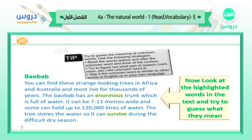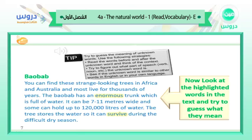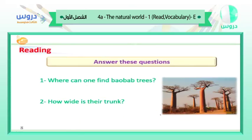The tree stores the water so it can survive — it stores the water so it can survive, meaning to stay alive during the difficult dry season. We read before and after, then we guess the meaning, because it's a dry season and it stores water — one hundred and twenty thousand liters of water — so survive means to stay alive.